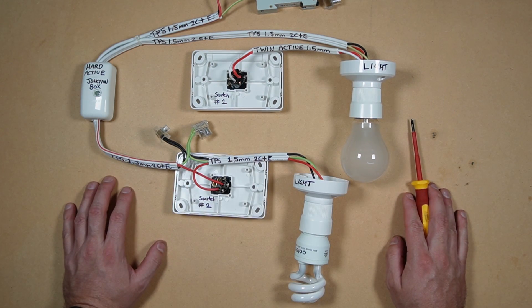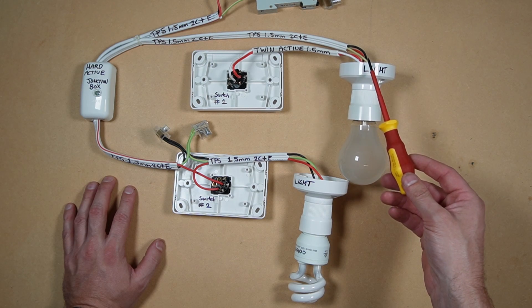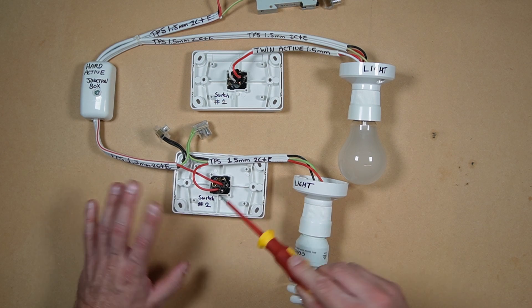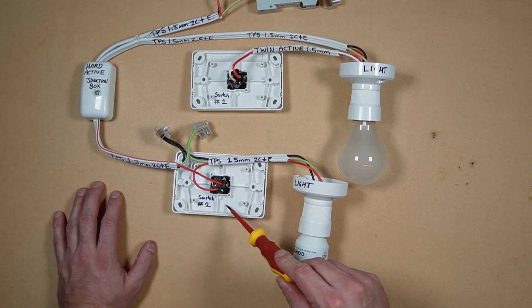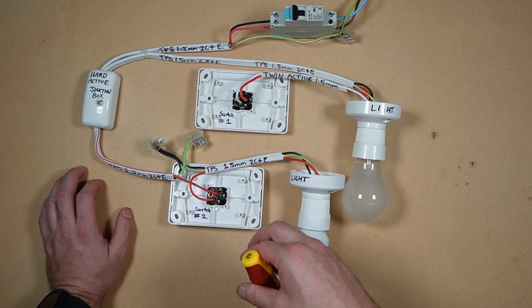In renovations, at the front of the house, an old house might have looping at the light, and then they've decided to renovate and they've just picked off a hard active from the light in the front of the house and run it to the back of the house to their first switch in the new area, and then they've just continued with looping at the switch method at the back of the house.